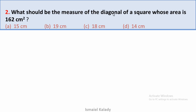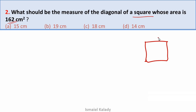This should be the measure of the diagonal of a square whose area is 162 cm square. In a 162 cm square area, we have to find the diagonal. We write the diagonal equation: the diagonal equals a√2.